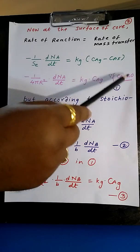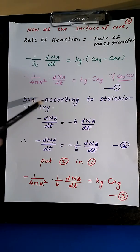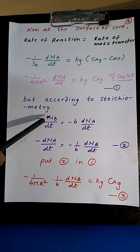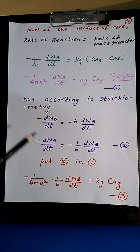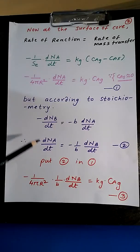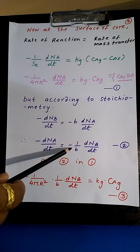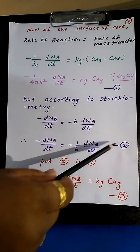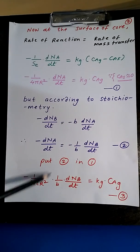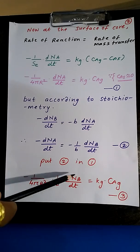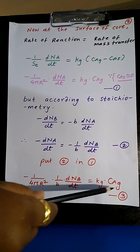So the first expression is: minus 1 upon 4πR² dNA by dt equals Kg into CAg. This is because Cs is nearly equal to 0. According to stoichiometry, minus dNB by dt, the consumption of B with respect to A, equals b times minus 1 upon b times dNA by dt, since the reaction is A(g) + bB(s) giving product.